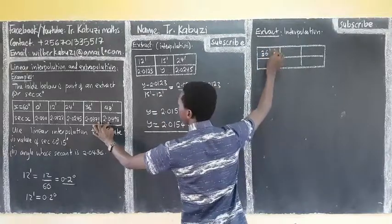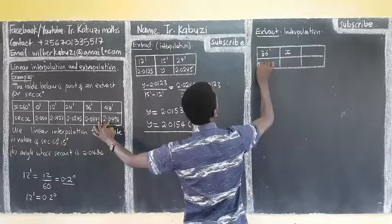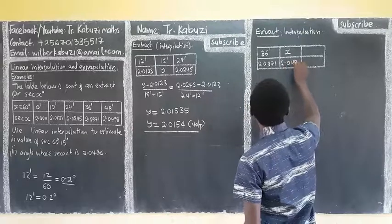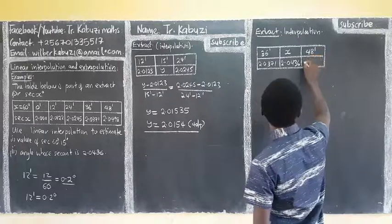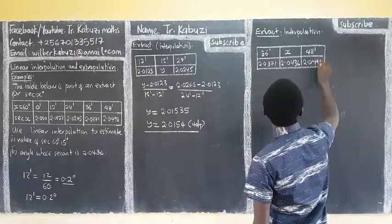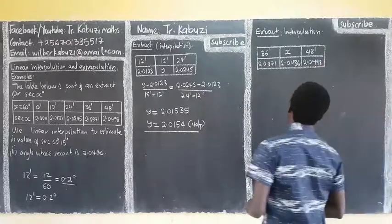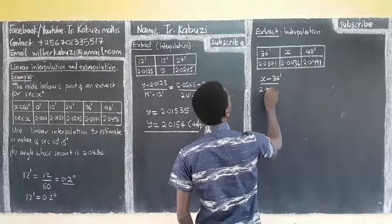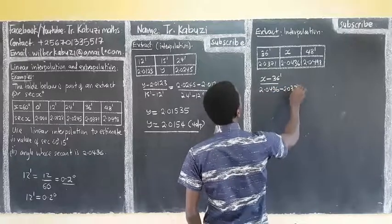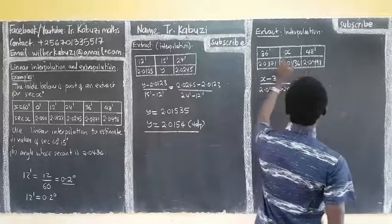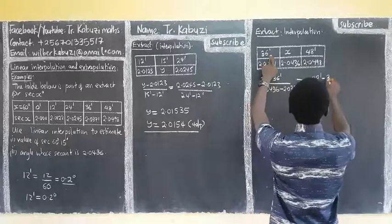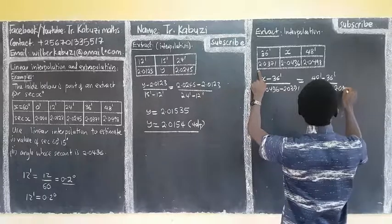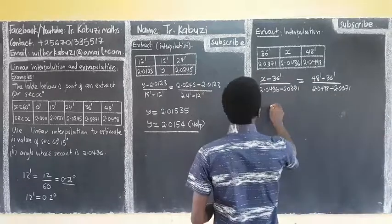They want 2.0404, which is between these values. At 36 minutes, I have 2.0371. At 48 minutes, I have 2.0498. The value I'm looking for is in between. So this minus this, X minus 36 minutes over 48 minus 36 equals 2.0404 minus 2.0371 over 2.0498 minus 2.0371.